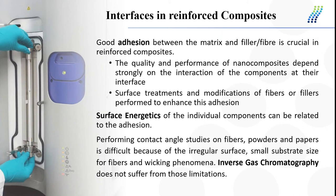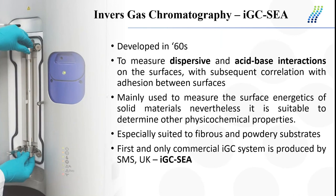IGC — inverse gas chromatography — doesn't suffer from those limitations. IGC was developed in the 1960s and is mainly used to measure surface energetics of solid materials. Nevertheless, it's suitable to determine other physicochemical properties of solid materials, and is especially suited to fibrous and powdery substrates.